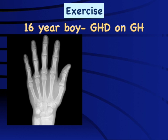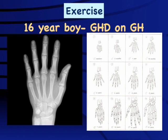Exercise two: a 16-year-old boy with growth hormone deficiency on growth hormone therapy. Is there much growth potential left? Looking at the x-ray, all the small bones have fused and the radius and ulna have nearly fused as well. This tells us the bone age is approximately 16 years, 99% of growth has been achieved, and there is no point continuing expensive growth hormone treatment.